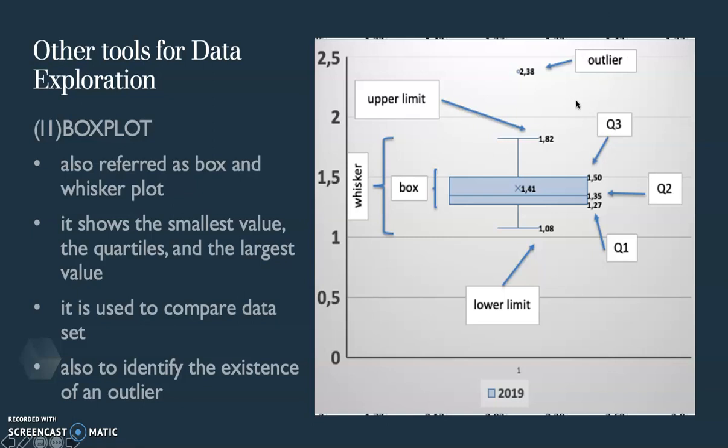One important note that I would like to tell you is the whisker here doesn't always show the minimum value of your data. But it is just the lower limit and the upper limit of the whiskers. Because this shows the dispersion of the data from the median. The lower limit and the upper limit may also be the maximum or the minimum, but it doesn't always have to be.